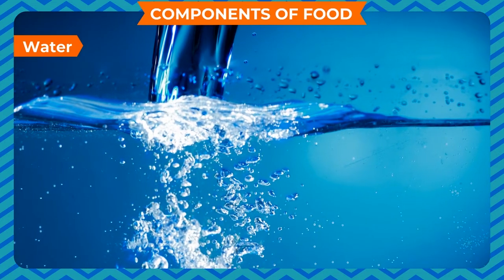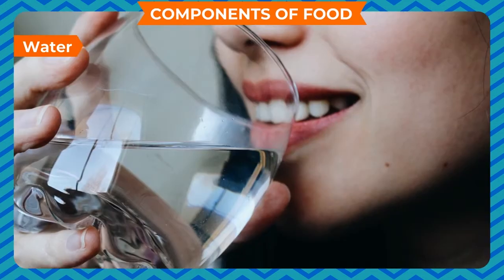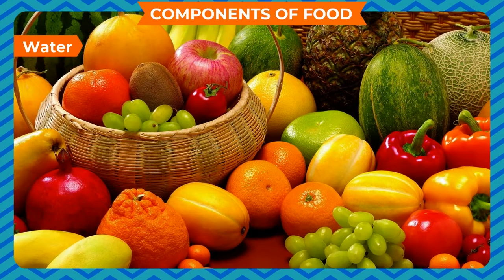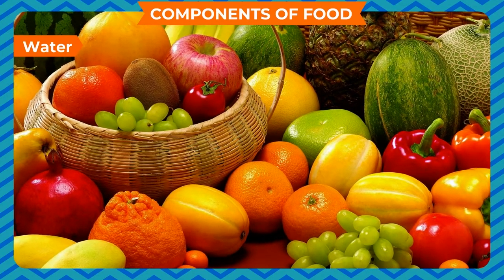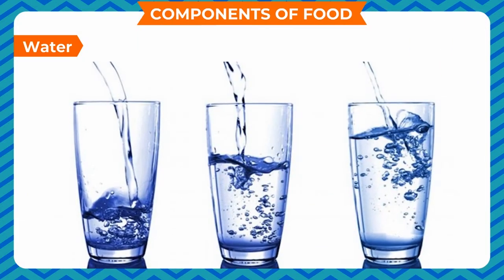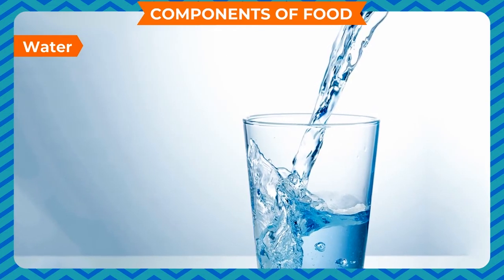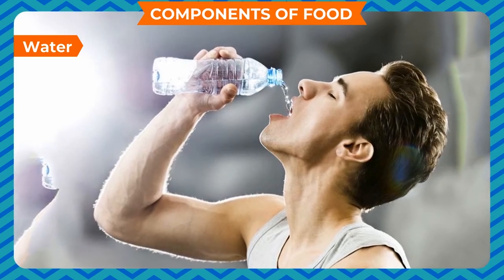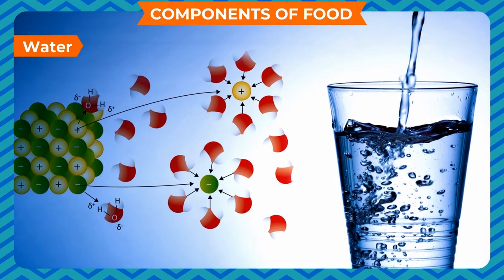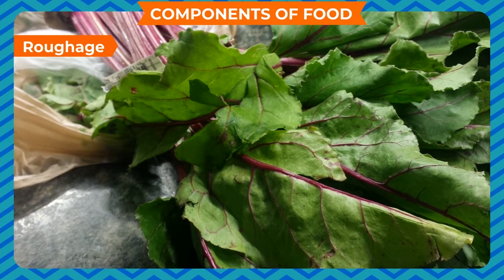We lose a lot of water every day as we breathe, sweat, or expel wastes. About half of this water is replaced by the water in the food we eat — fruits and vegetables contain large quantities of water. The other half is replaced by the water we drink. Human beings need three to four liters of water every day to stay healthy. Despite being vital for our body, water does not provide any energy; it only serves as a solvent in which all chemical reactions take place.